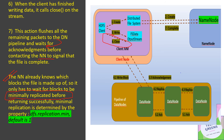Once the minimum replication is achieved, the NameNode successfully assumes that the file is written. This minimum replication is governed by the property dfs.replication.minimum, and its default value is one. That means once the data is successfully copied on even a single DataNode, the NameNode will assume the file is safely written, and then the pipelining of DataNodes will create the replicas of the blocks on the other DataNodes.